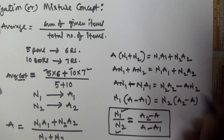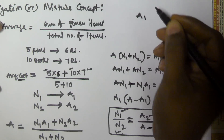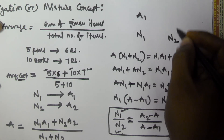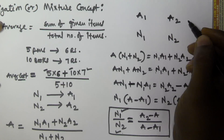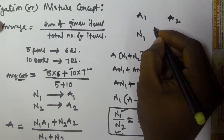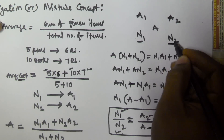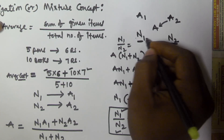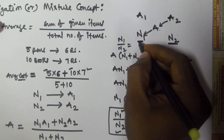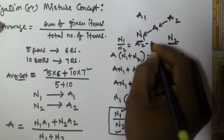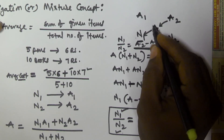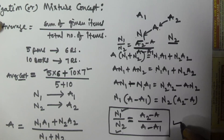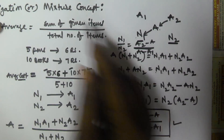In the graphical representation, we have N1 items with average weight A1 and N2 items with average weight A2, and the overall average of both is A. The ratio N1/N2 is obtained as: N1 corresponds to (A2 − A) and N2 corresponds to (A − A1). This graphical representation of the formula will be used to solve all allegation and mixture related problems.